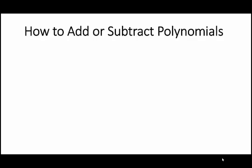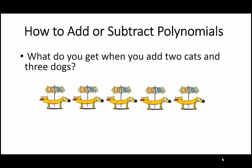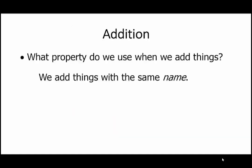How to add or subtract polynomials. What do you get when you add two cats and three dogs? Five cat-dogs? No — the cats continue to be cats and the dogs continue to be dogs. You may have five pets, but you still have two cats and three dogs. We can apply this same principle when we add polynomials, because we add things with the same name.